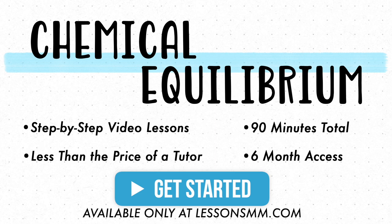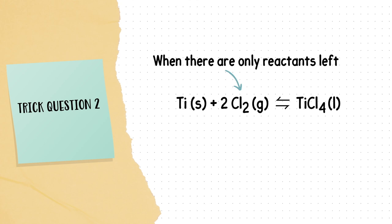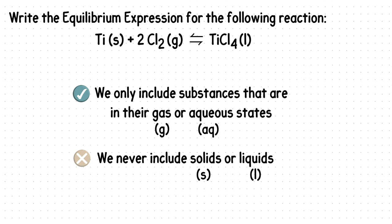Alright, let's continue to the next trick. Trick question number two is when there are only reactants left. Again, we will not include solids or liquids in our equilibrium expression. So we will only have CO2 in our expression.